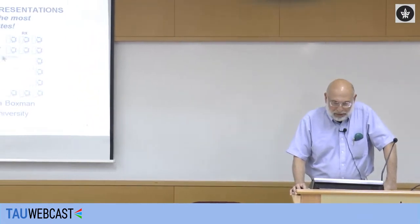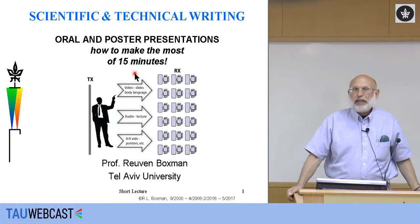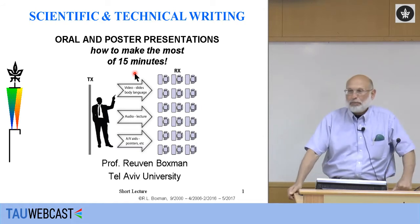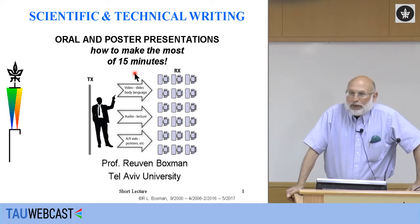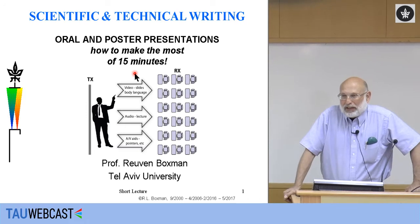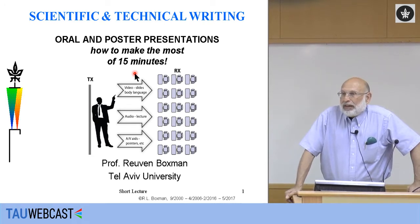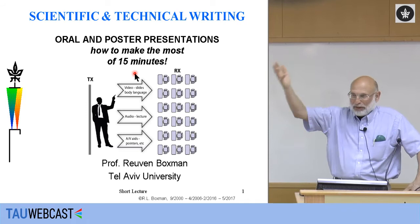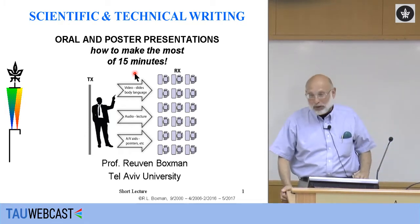I'm Ray Boxman and our topic today is oral and poster presentations — how to make the most of 15 minutes. Typically at a conference, if you have the opportunity to give an oral presentation, you're allocated something between 10 and 20 minutes, 15 minutes being typical. In a very crowded conference, 10 minutes is all you get, and even if you're giving a department seminar nominally an hour, you really only have 40 minutes after introduction and questions.